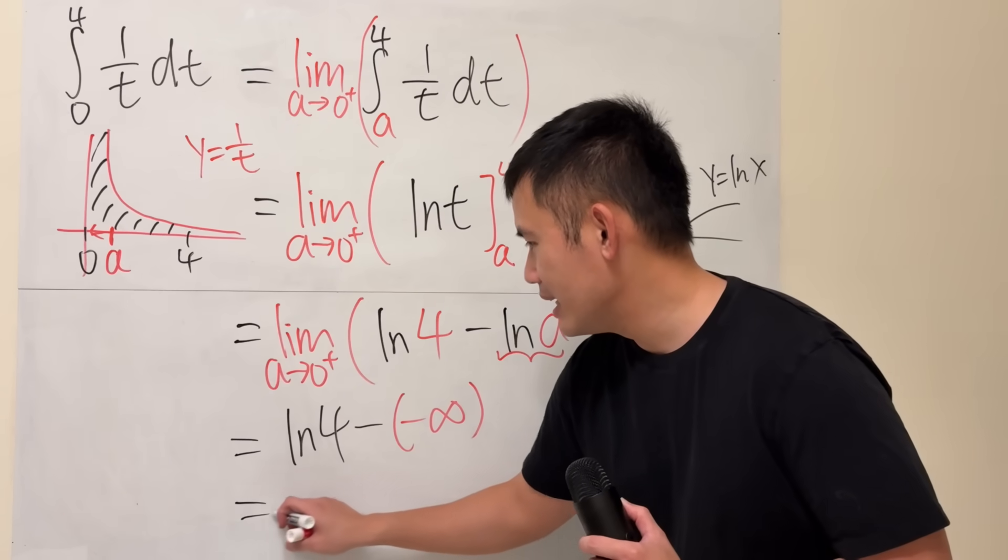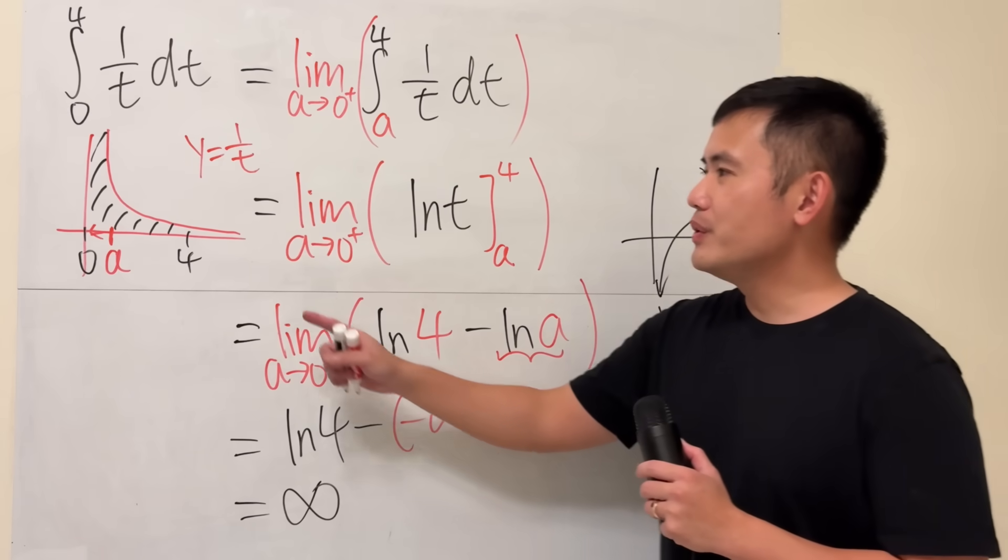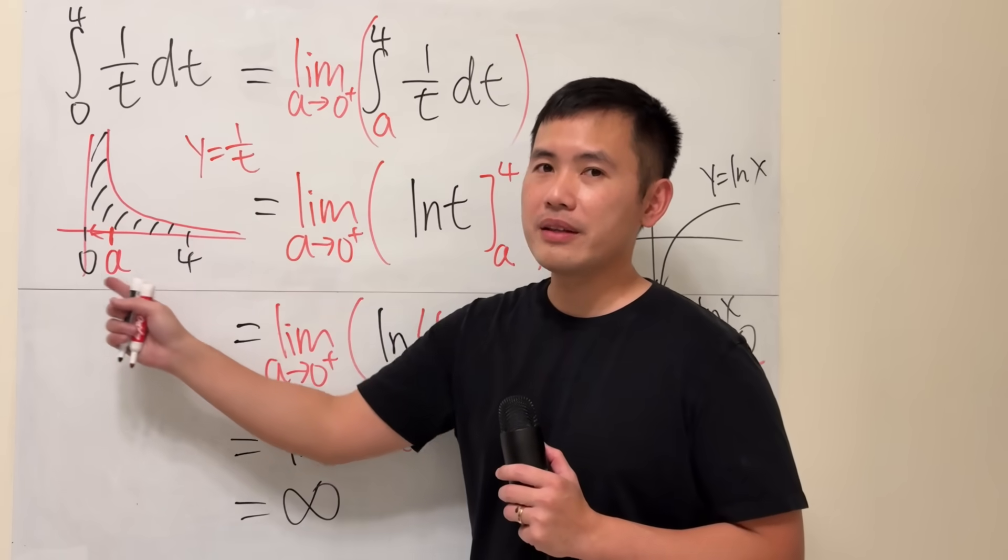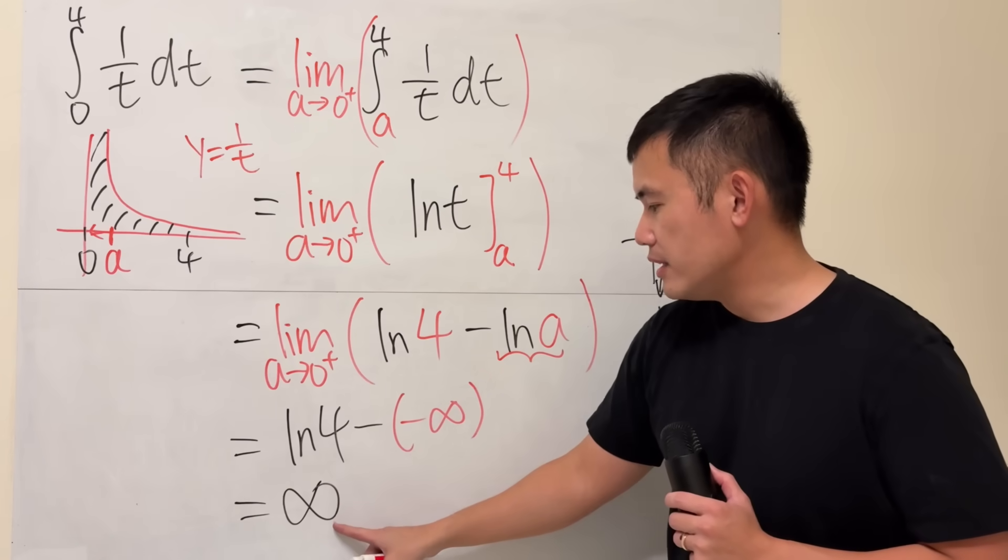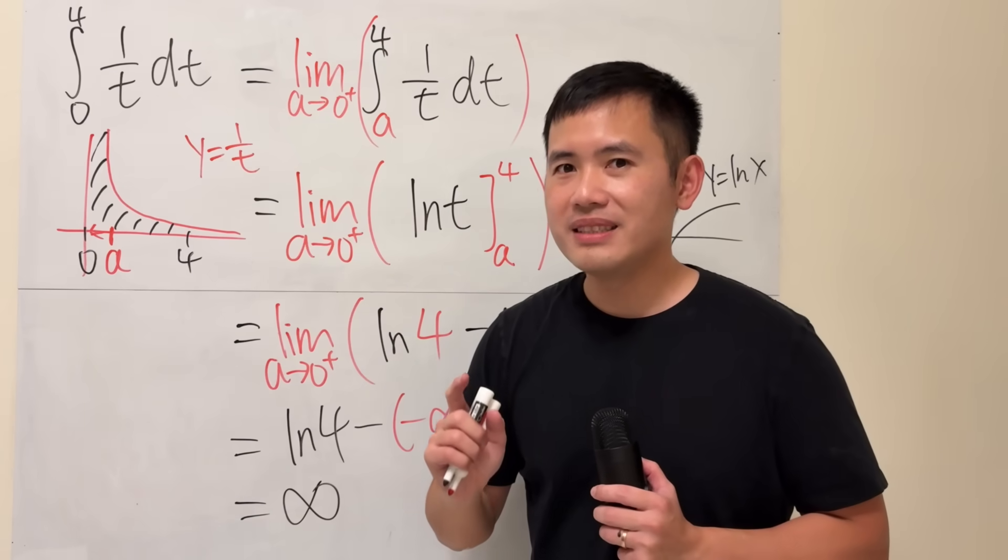So what does this mean? Well, if you interpret this integral as the area under the curve, then the infinity shows you that, for this region, we have infinite area.